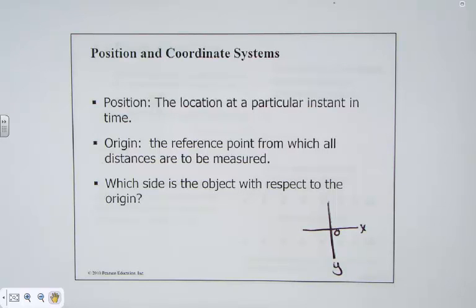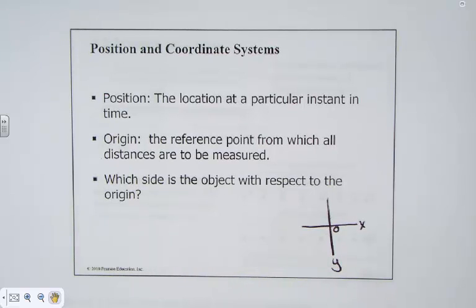And we'll consider which side of the object. Are you to the north, south, east, or west of the actual origin? The origin is a convenient spot in which we measure the reference point. On an x, y axis, it's often a zero, zero mark.